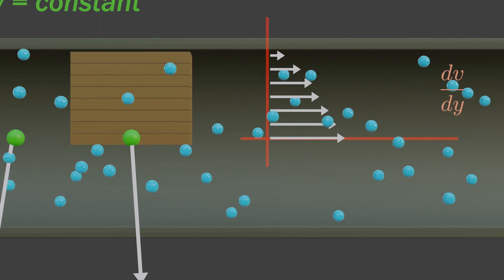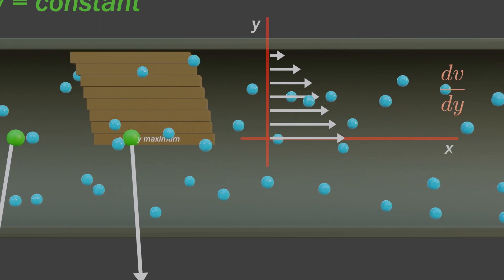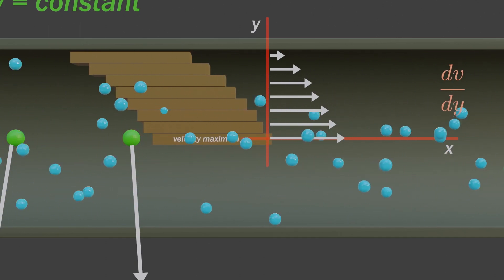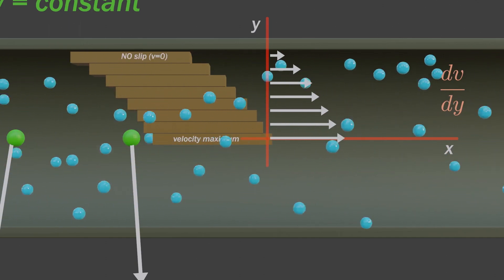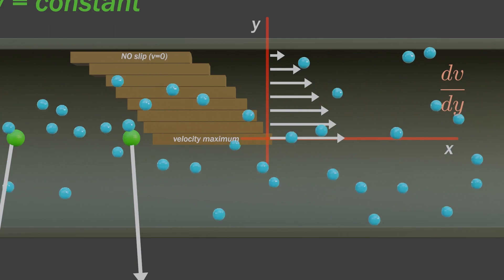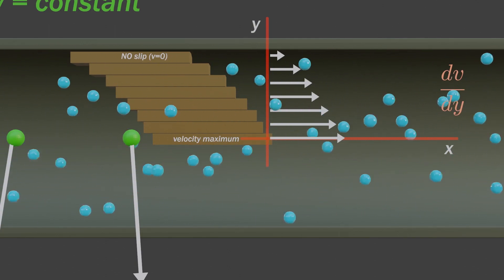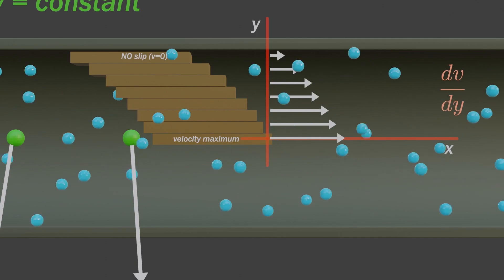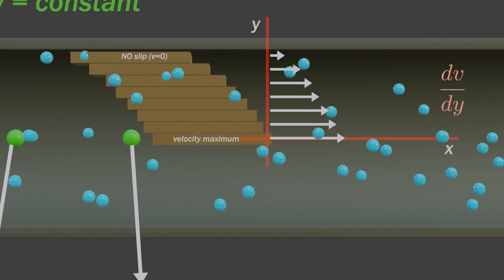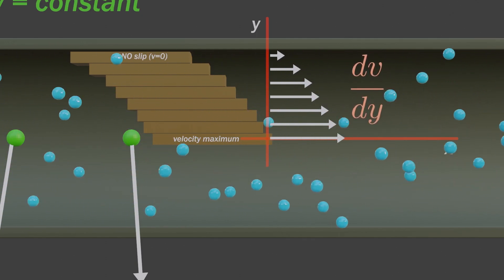Imagine these fluid layers as a brick. Brick at pipe center possesses maximum velocity, whereas brick at the pipe wall has zero velocity. Due to friction between bricks, velocity changes in y direction. This change in velocity with respect to y direction creates velocity gradient.